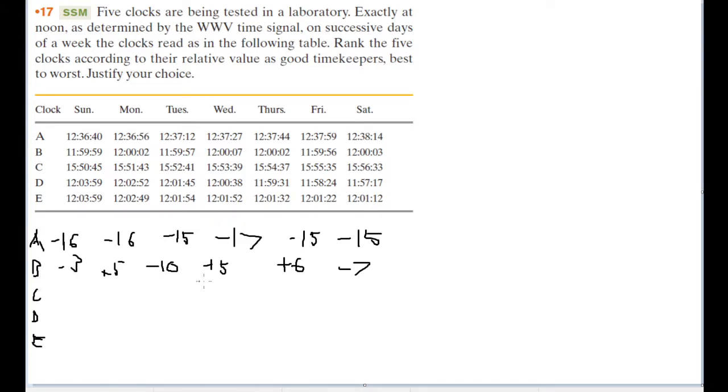In the case of B, for instance, it would be a little bit harder because the range in terms of how far off the time is ranges from 3 seconds to 10 seconds. We have a larger range there, meaning that this clock seems like it's going to be a little bit worse than A when it comes to accuracy and how good it is at timekeeping.